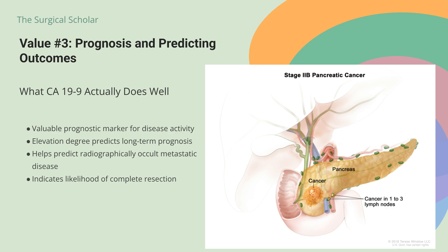Now let's talk about what CA-19-9 actually does well. Serum levels have considerable value as prognostic markers and as indicators of disease activity in patients with initially elevated levels. The degree of elevation — both at initial presentation and in the postoperative setting — is associated with long-term prognosis. Among patients who appear to have resectable pancreatic cancer, the magnitude of the preoperative CA-19-9 level helps predict the presence of radiographically occult metastatic disease.